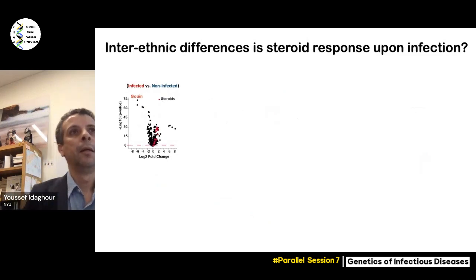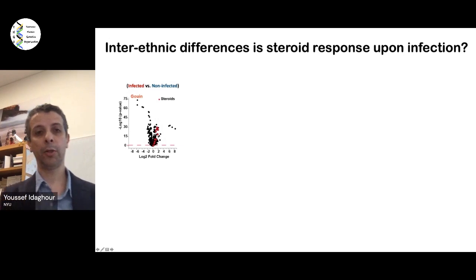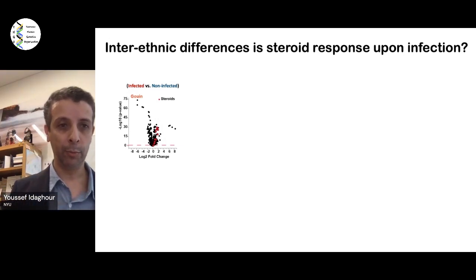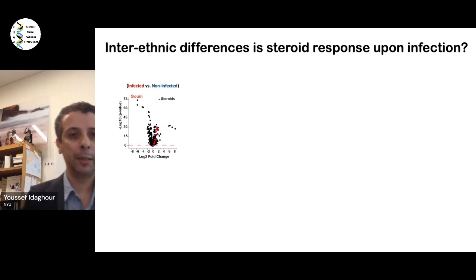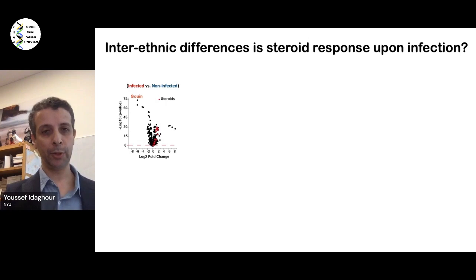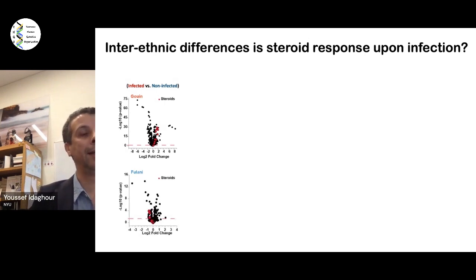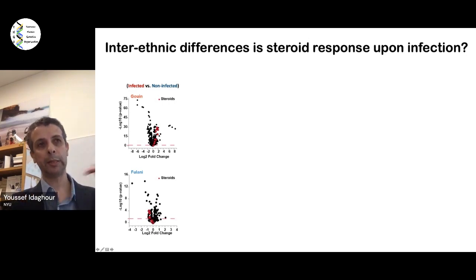In the last two to three minutes, I'll show the most recent results. We saw this elevation of steroids in the Guan ethnic group, so we went back to the field the following year to ask: if we see this in the Guan, what happens in other ethnic groups? In Burkina Faso, you have multiple ethnic groups — one of the most interesting is the Fulani, who are known to have lower susceptibility to malaria relative to other ethnic groups. Using exactly the same methodologies and statistical analysis, to our big surprise we saw completely the opposite trend in the Fulani — those steroids either don't change or some are actually downregulated.